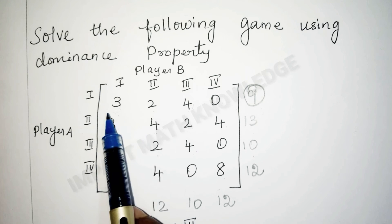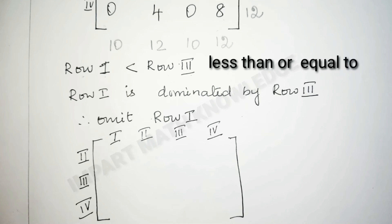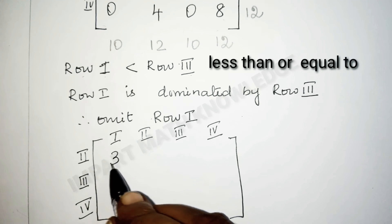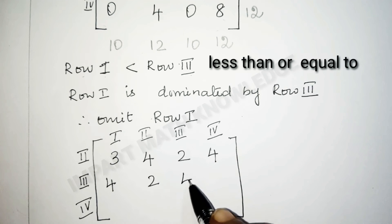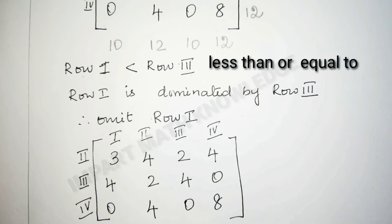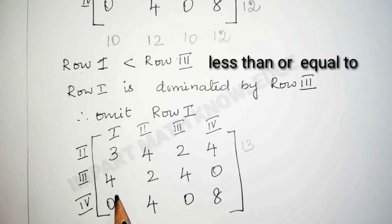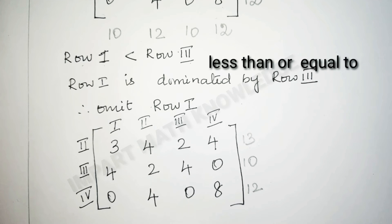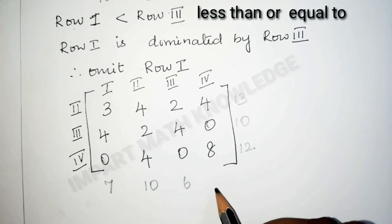Now the reduced matrix is: row 2 — 3, 4, 2, 4; row 3 — 4, 2, 4, 0; row 4 — 0, 4, 0, 8. In the reduced matrix, take the row total and column total. First row total is 13, second row total is 10, third row total is 12. Similarly, column totals are 7, 10, 6, and 12.